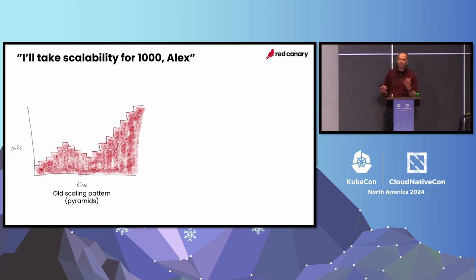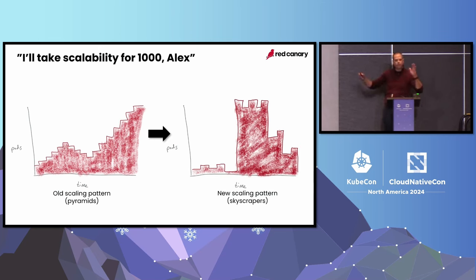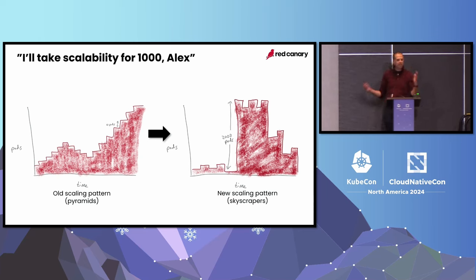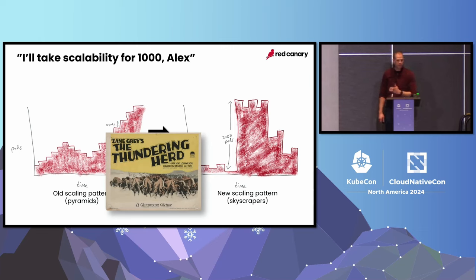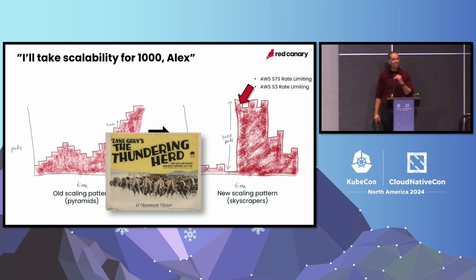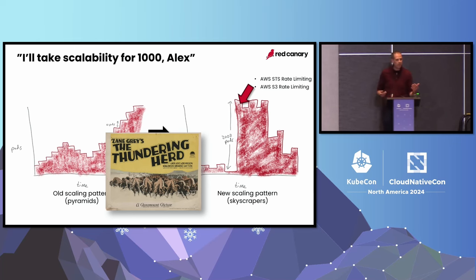Once we moved on from that, we had some more exciting problems. Our old scaling pattern looked like pyramids — we'd scale up and scale down like pyramids. The new one kind of looked like skyscrapers, a city skyline. The problem was we used to move like 10 pods at a time, but now that we can scale with reckless abandon, we can add like 2,000 pods immediately, which is really cool — but you're at a Kubernetes conference, so you're probably familiar with some other problems that creates. Our system was pretty mature at this point and we'd resolved a lot of scalability problems before. But by scaling up immediately like this, we started running into all sorts of rate limits we had never seen before — S3 rate limits, STS rate limits running in AWS. The challenge was that because we scaled so slowly before, we were masking a lot of latent defects in our code that we had no idea about.